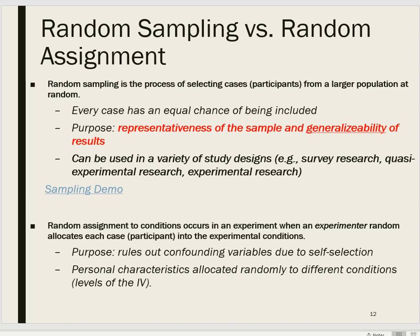Within sampling error — and it's not a perfect process, and there are various different types of random sampling — but for now we'll treat it as simple random sampling. It gives every case an equal chance of being included, and what that does is make it so that the sample is likely to be representative within sampling error.